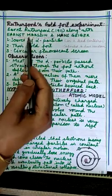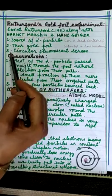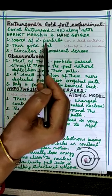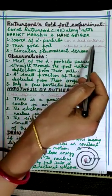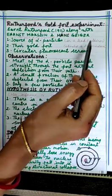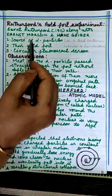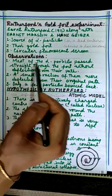In his experiment, Rutherford bombarded a thin sheet of gold of the order of 4 × 10^-5 cm having almost 1000 atoms in a layer with alpha particles in an evacuated chamber.